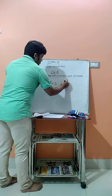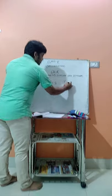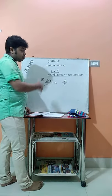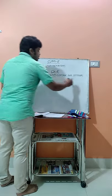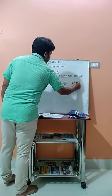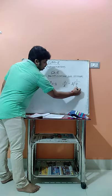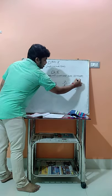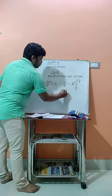The next one is 7/5. Since 7 divided by 5 does not divide evenly, we convert it into a mixed fraction. We divide: 5 goes into 7 once with a remainder of 2. So the answer is 1 and 2/5.